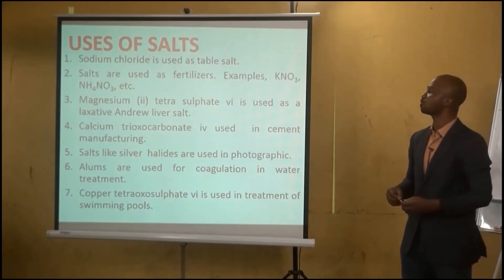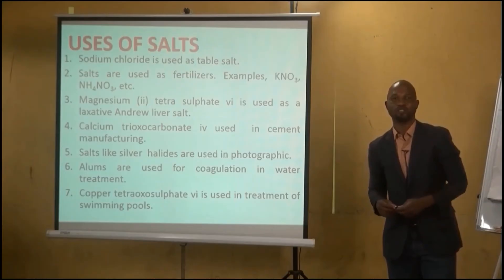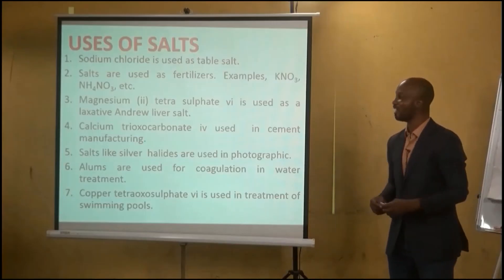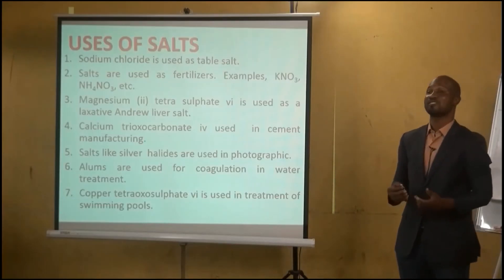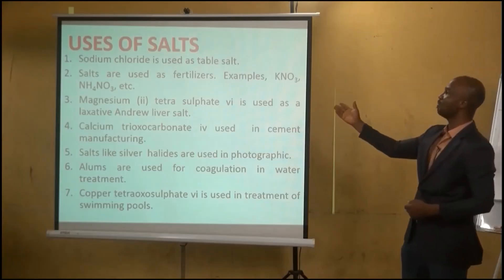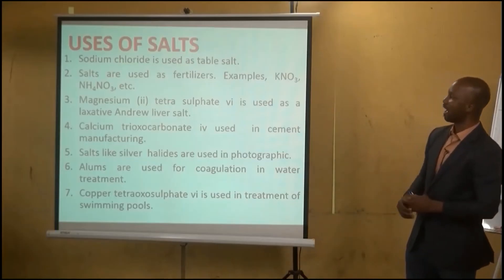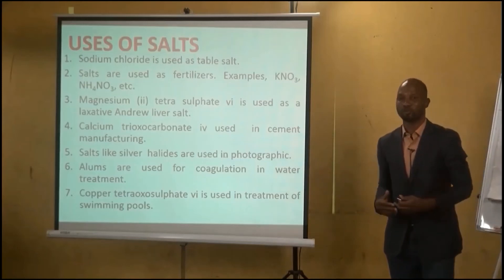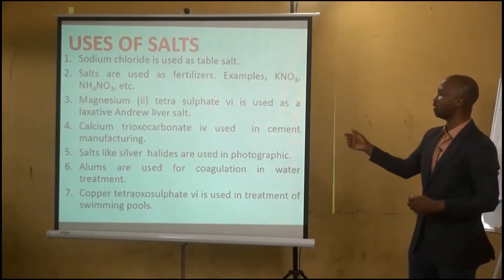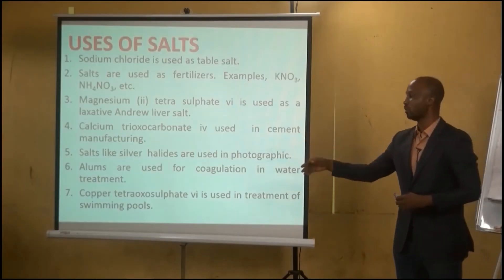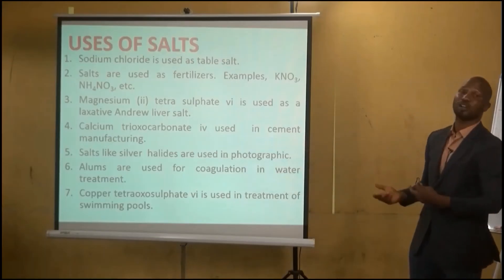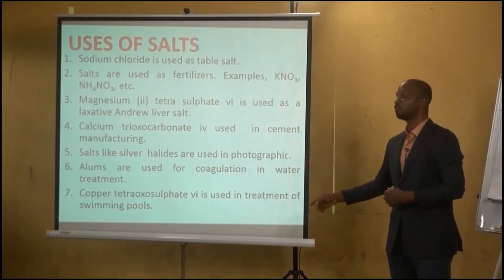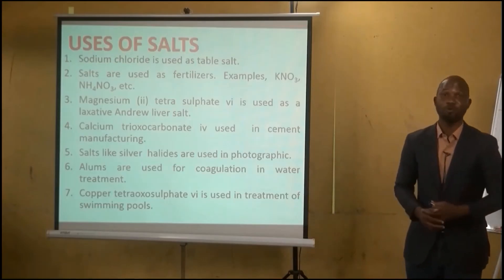Now for the uses of salts: sodium chloride is used as table salt for cooking. Salts are used in fertilizers — examples include potassium trioxonitrate(V) and ammonium trioxonitrate(V). Magnesium tetraoxosulfate(VI) is used as a laxative. Calcium tetraoxosulfate(IV) is used in manufacturing. Silver halides are used in photography. Alum is used for coagulation in water treatment, and copper(II) tetraoxosulfate(VI) is used in swimming pool treatment, giving the water its characteristic blue color.